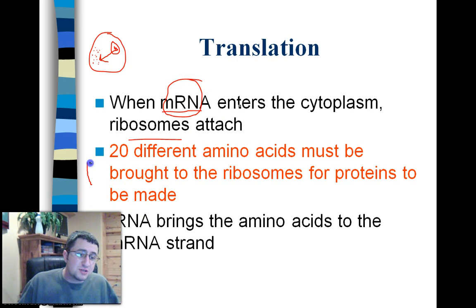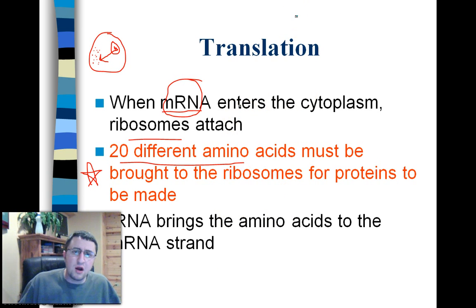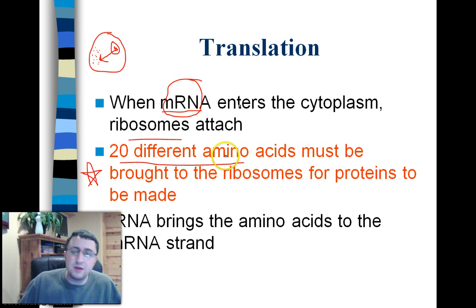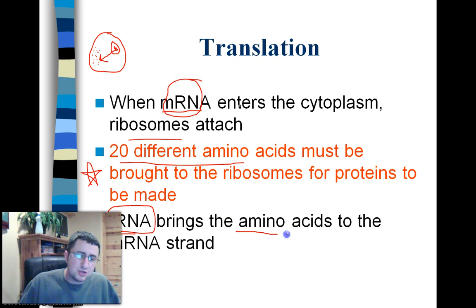One important thing to know is that there are only 20 different types of amino acids. You may be wondering: proteins are hundreds, if not thousands, of amino acids long — so what makes one protein different from another? Well, it's because the order of the different amino acids makes for a different protein. We also have another type of RNA called tRNA that actually brings the amino acids to the mRNA strand.